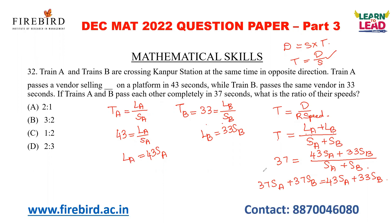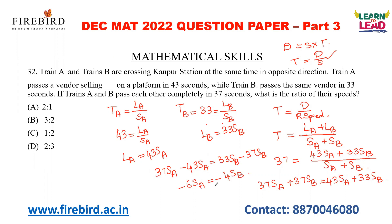They are asking the ratio of Train A to Train B. Rearranging: 37 × speed of Train A − 43 × speed of Train A = 33 × speed of Train B − 37 × speed of Train B. The difference gives: −6 × speed of Train A = −4 × speed of Train B. Cancelling the negatives: speed of Train A / speed of Train B = 4/6 = 2/3. So the ratio is 2:3.